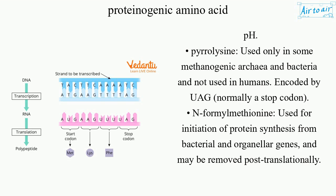Pyrrolysine: used only in some methanogenic archaea and bacteria, and not used in humans. It is encoded by UAG, normally a stop codon. N-formyl methionine: used for initiation of protein synthesis from bacterial and organellar genes, and may be removed post-translationally.